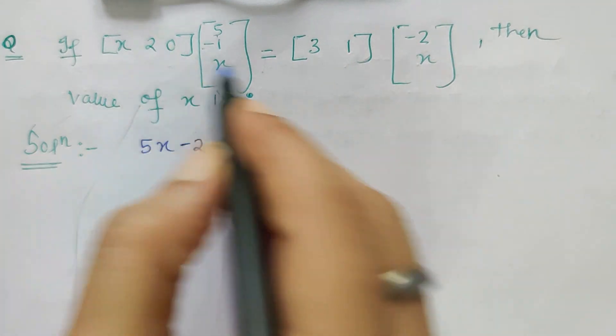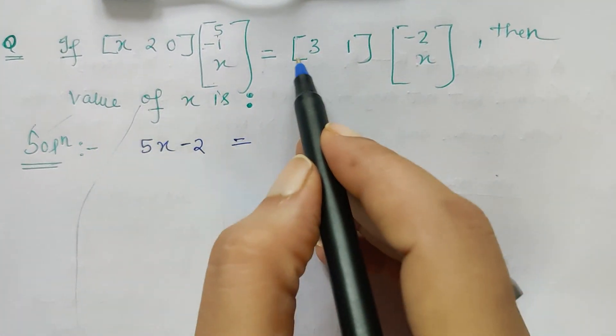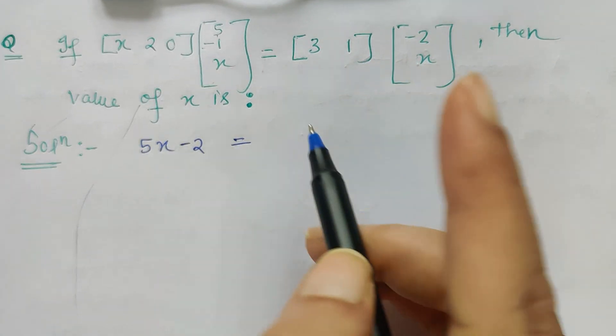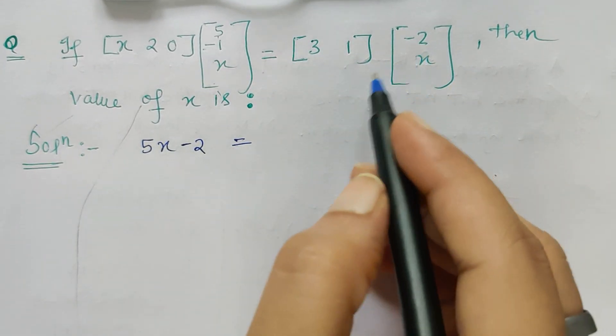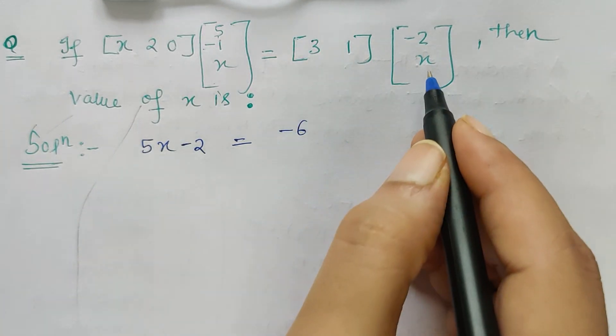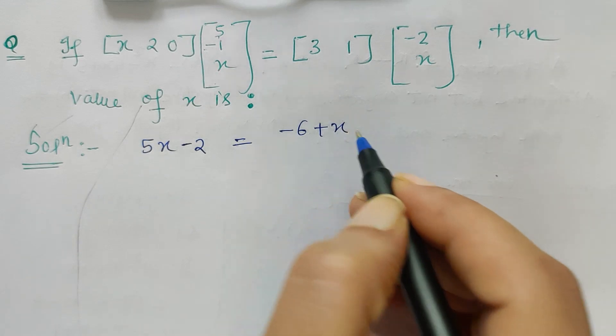And this is equal to again row into column, this into this plus this into this is a single element, right? So 3 into minus 2 is minus 6 and 1 into x is x. Now let's solve it further.